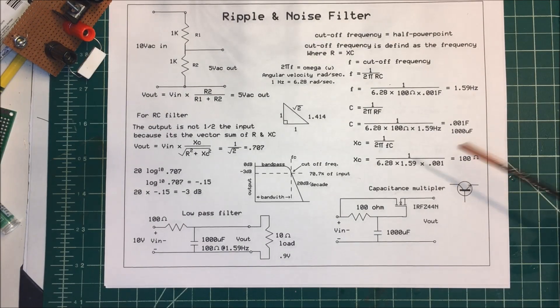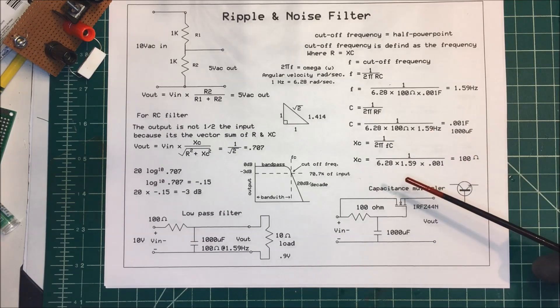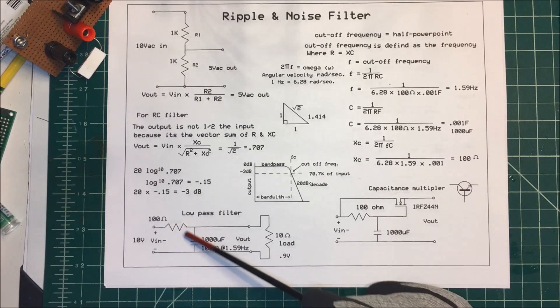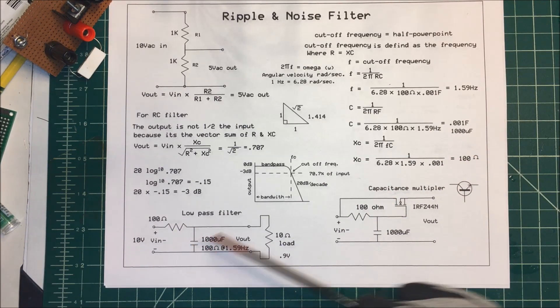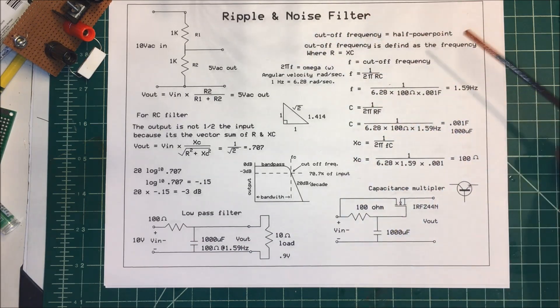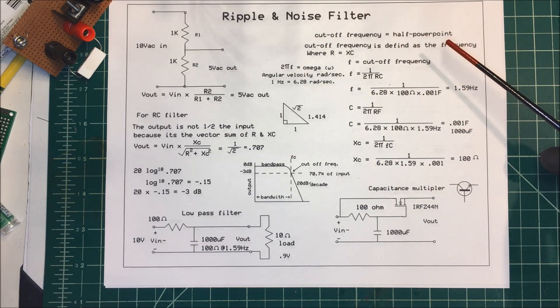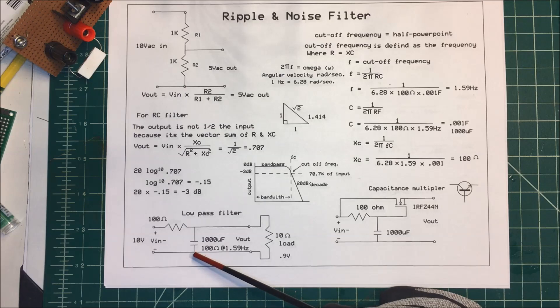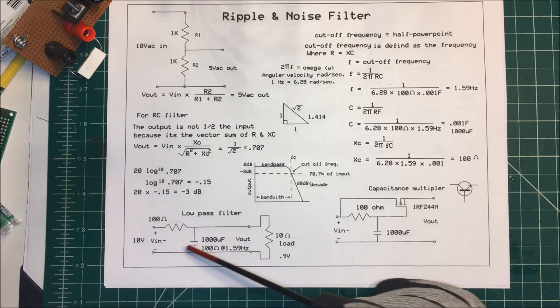Let's talk about an RC filter. I'm going to make a single-stage RC filter with just a resistor and a capacitor, and I'm going to use it to eliminate some ripple and noise on my power supply.